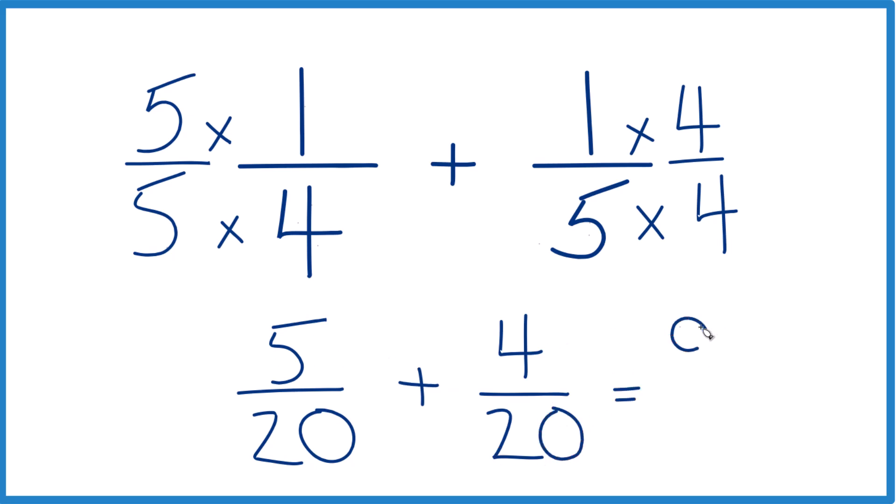5 plus 4, that's 9. And then the denominator, since we have 20 for both of them, we keep 20. We don't change that. So 1 fourth plus 1 fifth, that equals 9 20ths.